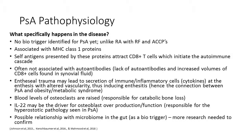Blood levels of osteoclasts are raised, which is responsible for catabolic bone loss similar to that of rheumatoid arthritis where we see erosions, and cytokines such as IL-22 may drive osteoblastic overproduction. So psoriatic arthritis is both catabolic and hyperostotic — it can present with both overproduction and destruction of bone. There is also a possible relationship with the gut microbiome that could potentially be the bio-trigger, but more research is needed to confirm this.